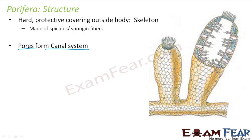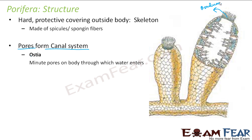To understand the canal system, we need to understand the different parts of a Porifera. Let us start with ostia. Ostia are the minute pores on the body through which water enters. As you can see in the picture, these are the small pores on the surface of the body — these pores are the ostia. Water will enter inside the Porifera through these pores.